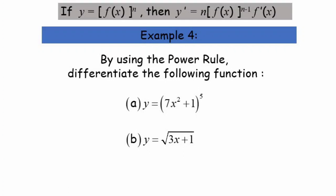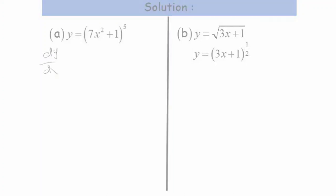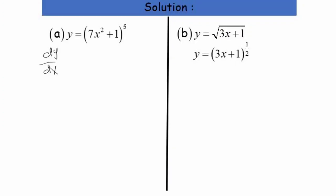Let's look at a few more examples using the power rule. Differentiate the following: for part a, y = (7x² + 1)⁵, and for part b, y = √(3x + 1). Solving part a, we want to find dy/dx. We bring 5 as the coefficient, so dy/dx = 5(7x² + 1)...